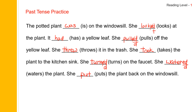Let us read the story in past tense. The potted plant was on the windowsill. She looked at the plant. It had a yellow leaf. She pulled off the yellow leaf. She threw it in the trash. She took the plant to the kitchen sink. She turned on the faucet. She watered the plant. She put the plant back on the windowsill.